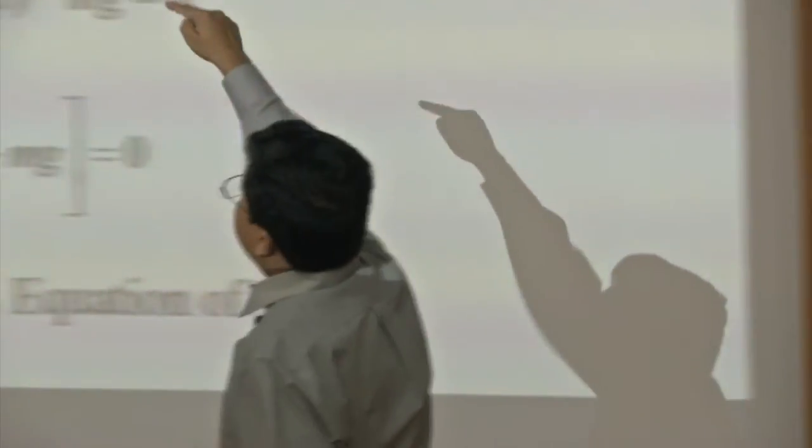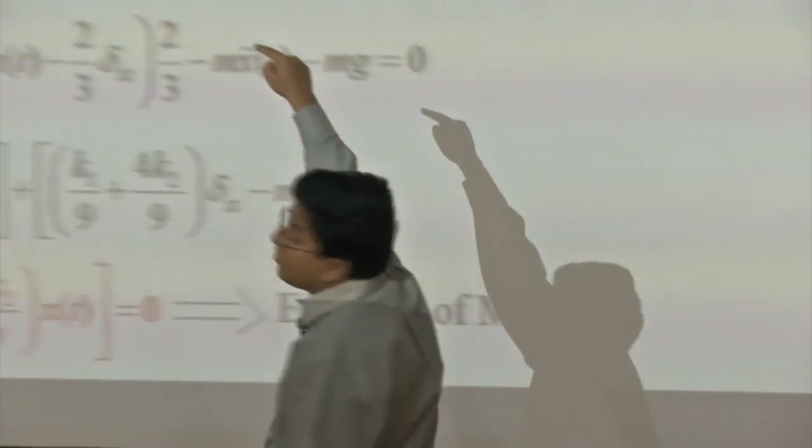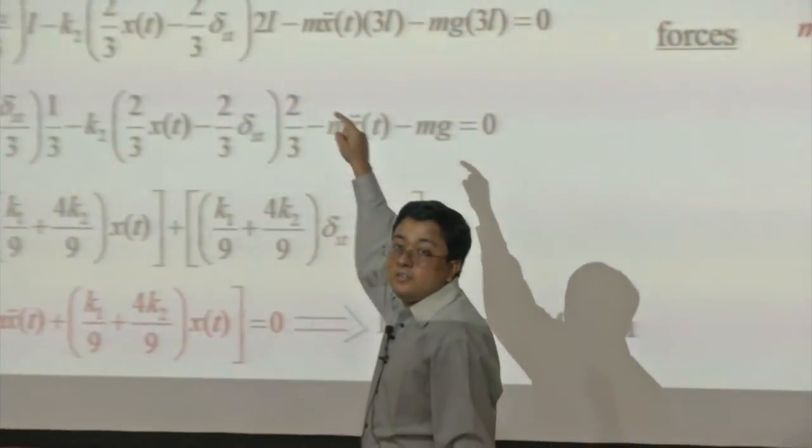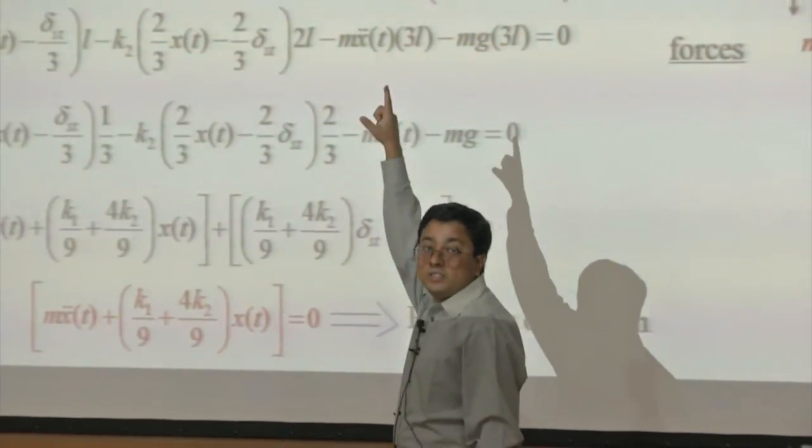In the second FBD, it is written as 1/3 of x(t) because the distances are each L, so the total span is 3L, meaning the spring is at the one-third distance.